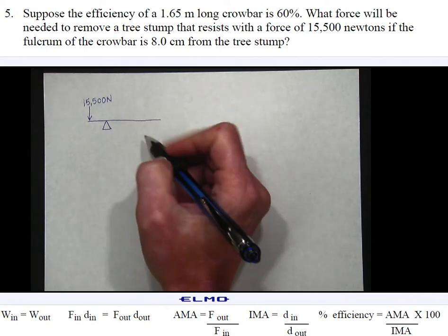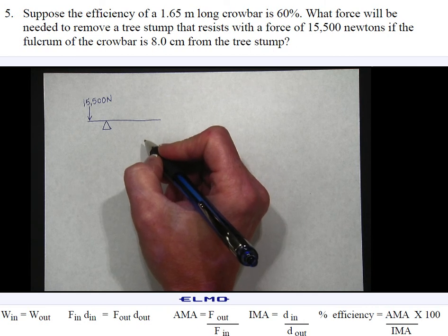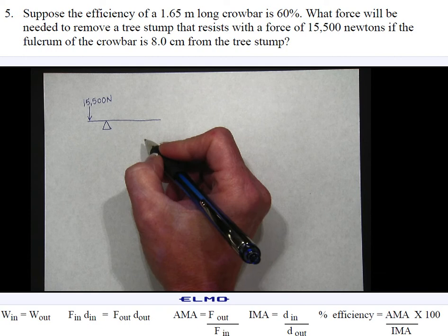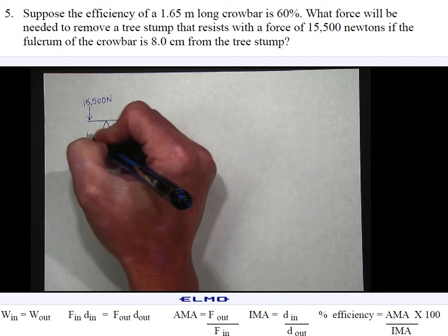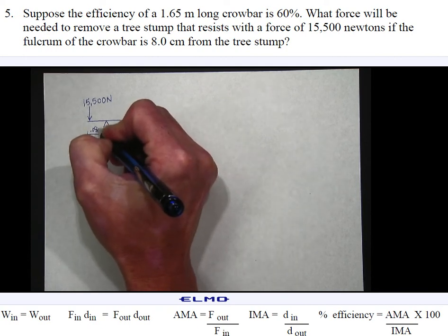And then we have the fulcrum that is 8 centimeters from the tree stump. But if you'll remember, our work is calculated in joules, which is a newton meter, so we need to have newtons and meters. So I'm going to convert 8 centimeters to meters and I get the distance from the tree stump to the fulcrum as 0.08 meters.